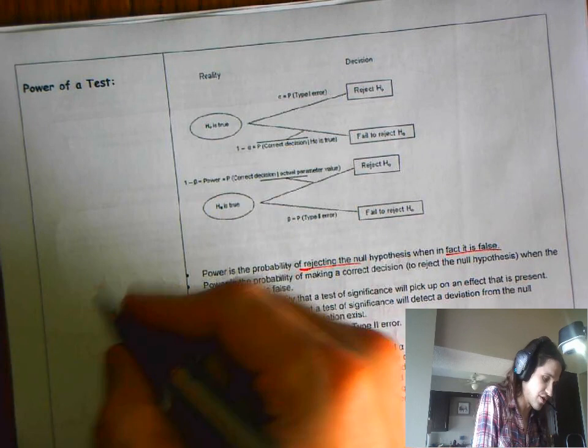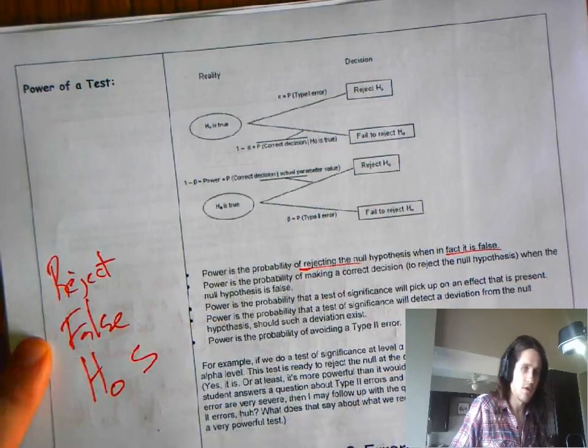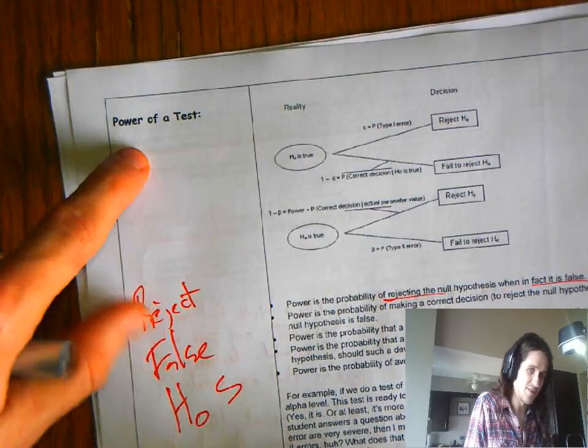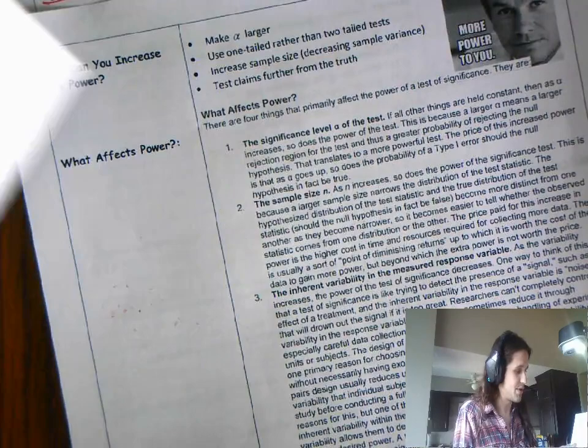What do you want a test to do? You want a test to reject false nulls. We want our test to reject false nulls. And a more powerful test rejects more false nulls. So that's what we're talking about here. How can we make a test that does a better job at rejecting false nulls?